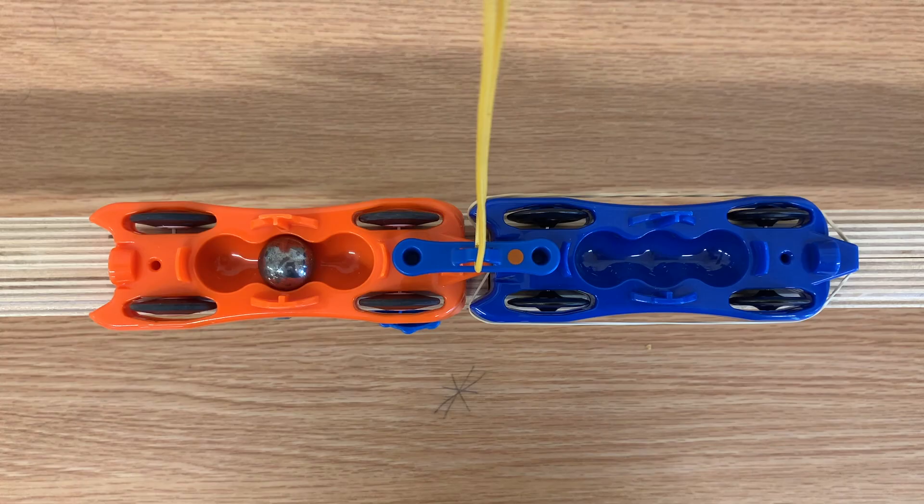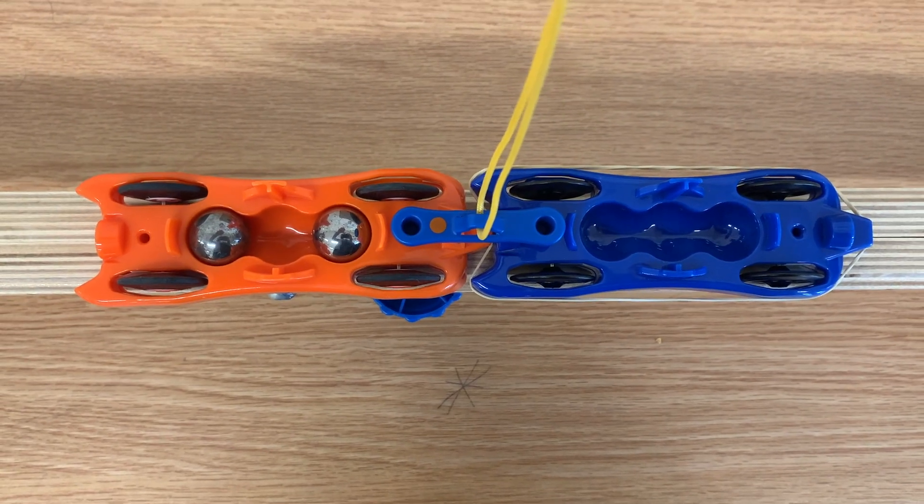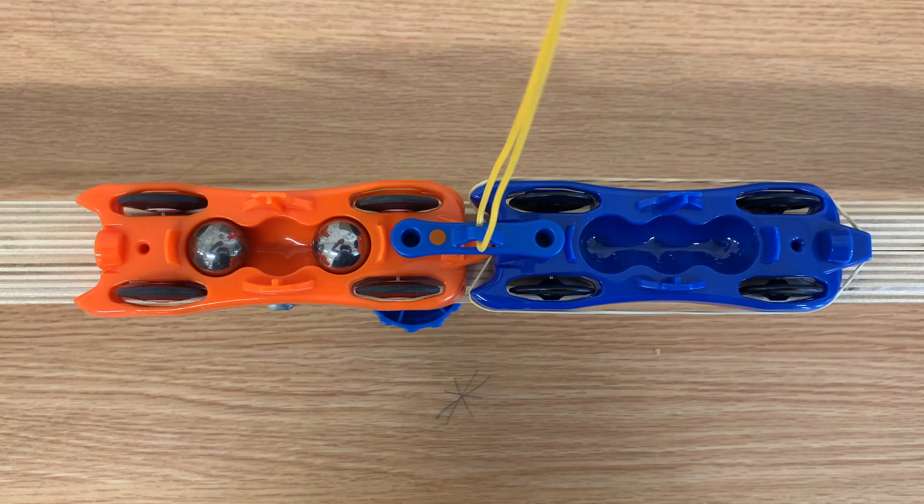The force from the rubber band is still the same, because it's still being stretched the same amount. The only thing that's changed is the mass of the orange car. Let's see what happens when we increase the mass even more. Predict what will happen to the orange and blue cars now.